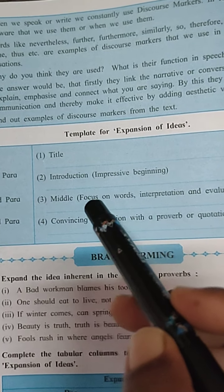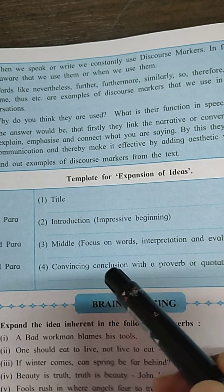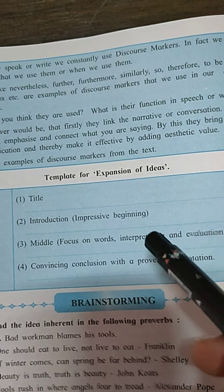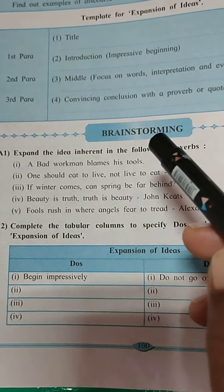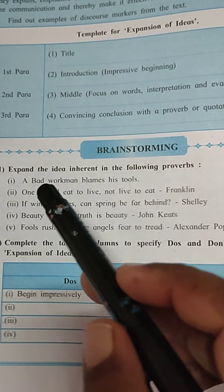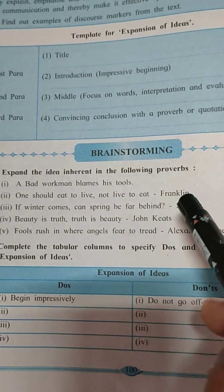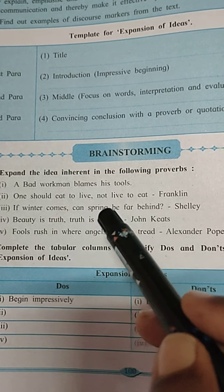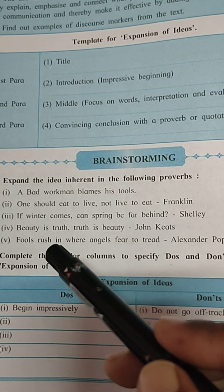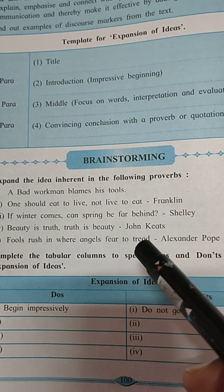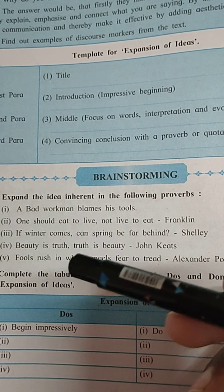Why are discourse markers used and what is the function of speech in writing? They link narratives and conversations, firstly. They explain, emphasize, and connect what is being said and bring clarity to communication. Therefore we use them to add effective and aesthetic value to our words, emphasizing the connection in what we are saying.